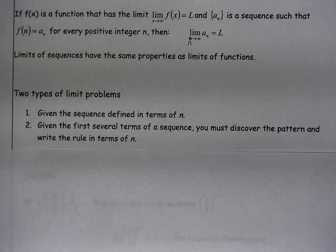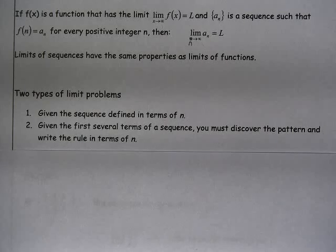So there's two types of problems we get here. One is we are given the sequence defined in terms of n. And the other, we're given the first few terms and we have to discover the pattern and write the rule in terms of n on our own and then find the limit. So we're going to run through several examples. They're pretty straightforward, so I'm not going to take too much time to do them.